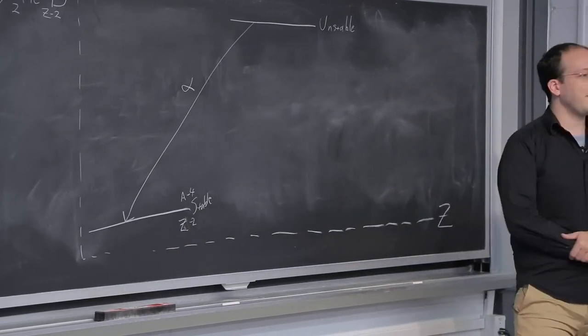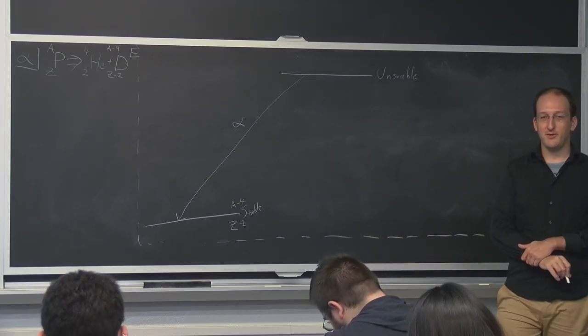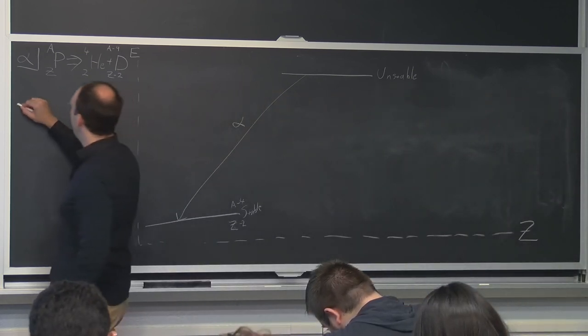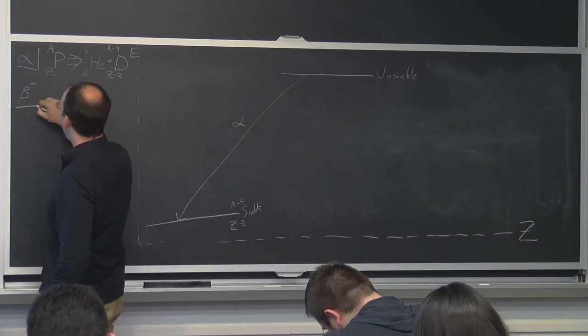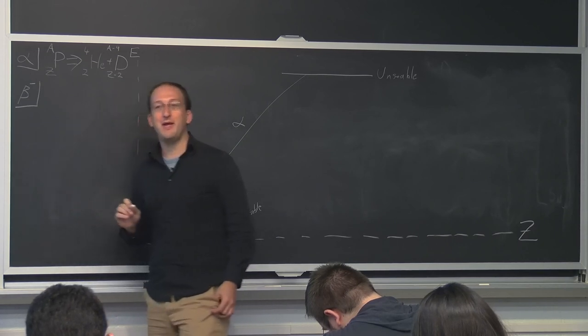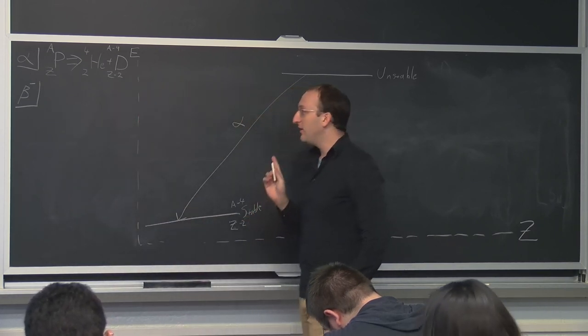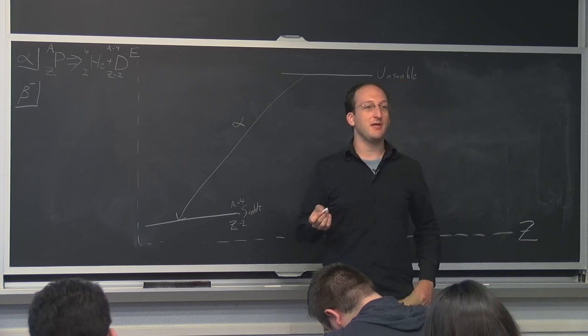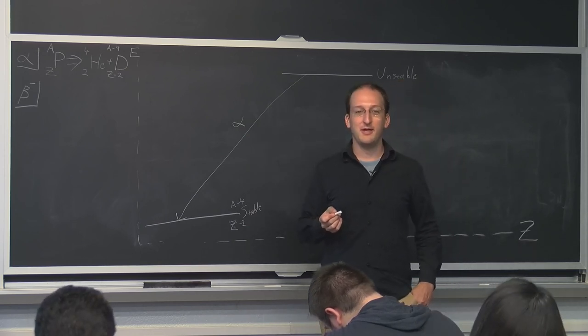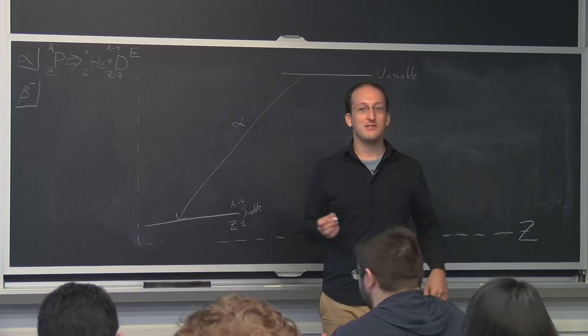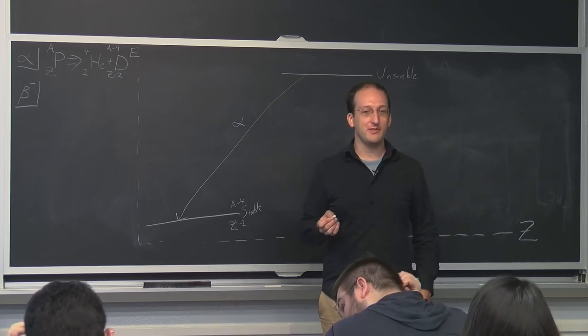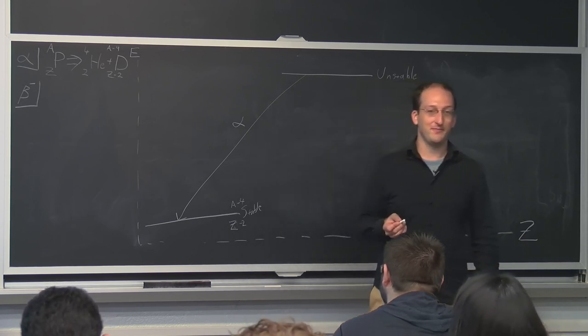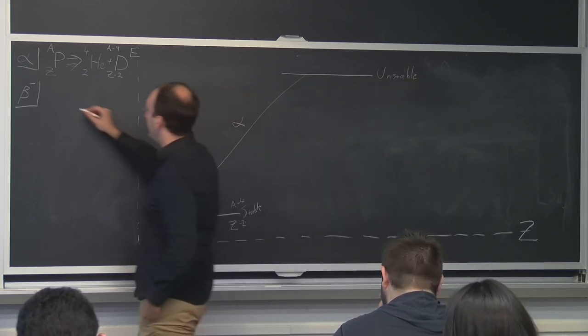What are some other ways things can decay? Beta decay. So what happens in beta minus decay, which would be the emission of an electron from the nucleus? What's the physical difference between a beta particle and an electron? Nothing. What's the nomenclature difference? The beta comes from the nucleus.